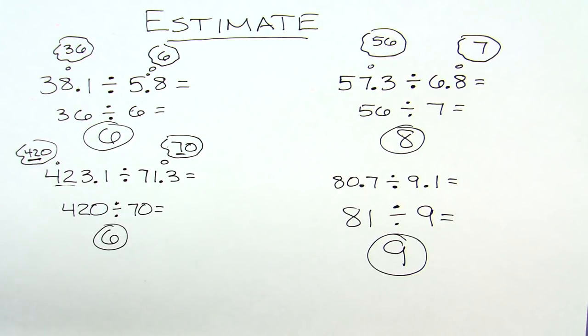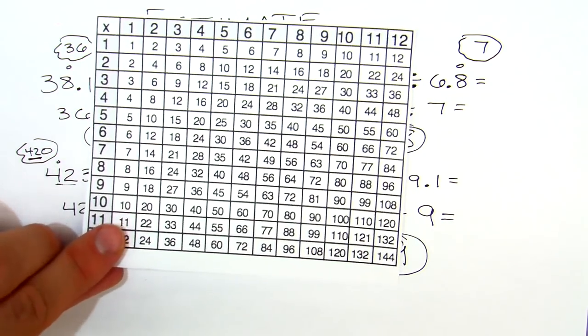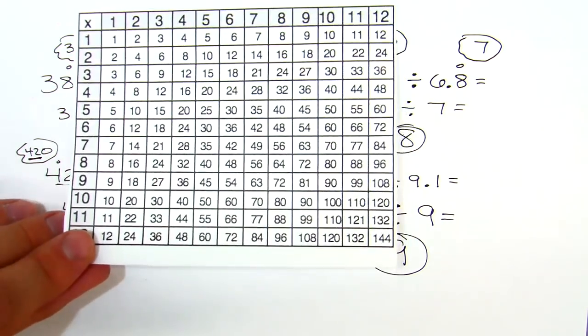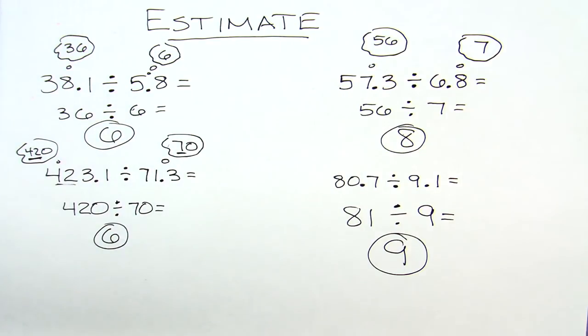So different ways to divide decimals with estimation is to think about what numbers go together with our basic facts. The goal of estimation is to be able to do it quickly, and most of the time in our heads without really writing anything down or using a calculator. So those are a couple tricks. Hope you found that helpful and we will catch you on the next one.